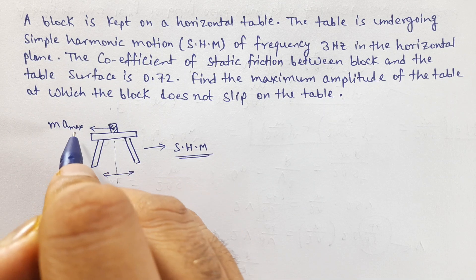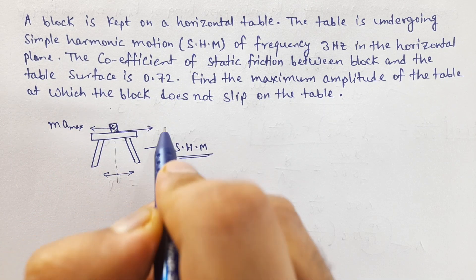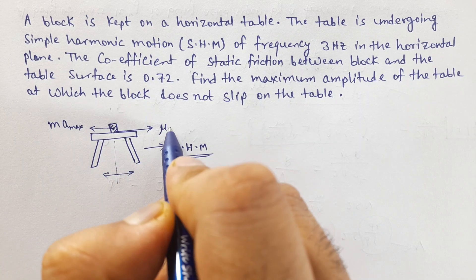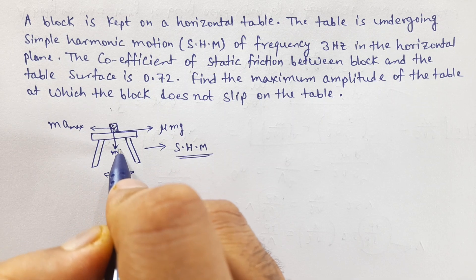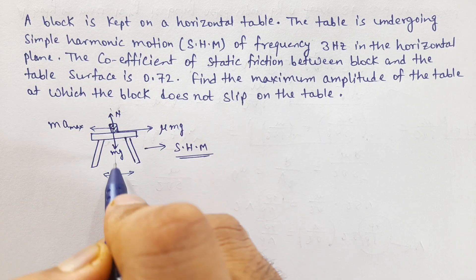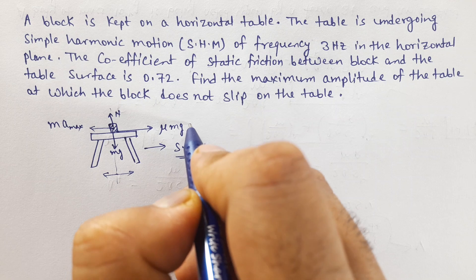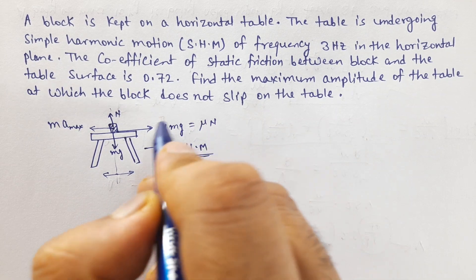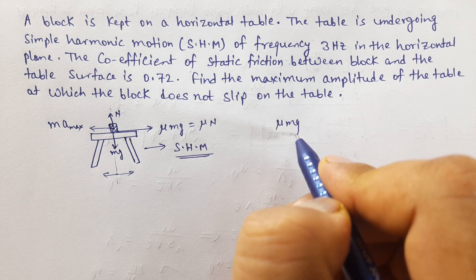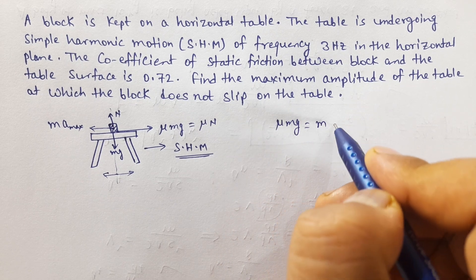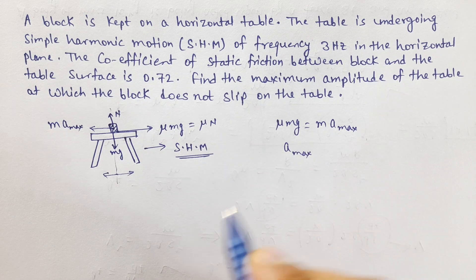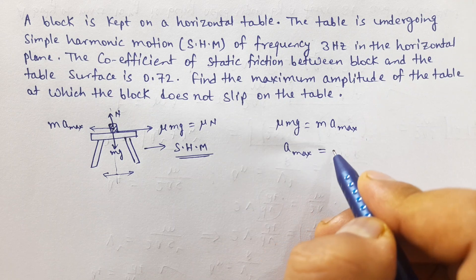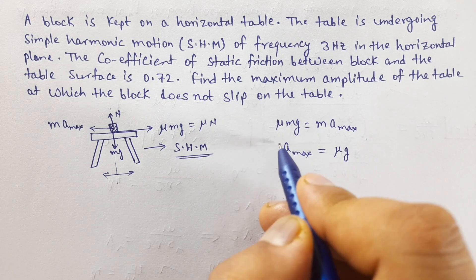When the block experiences pseudo force, the friction force acts on it. The friction force is μ times the normal reaction. Since the downward weight is mg, the normal reaction N equals mg, so friction force is μmg. Therefore, the condition for no slipping is: maximum acceleration A_max equals μg.